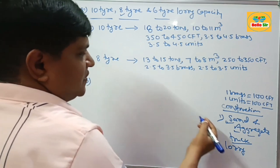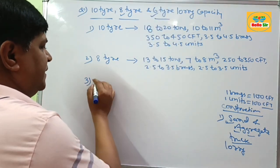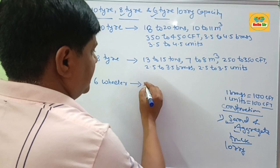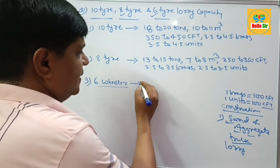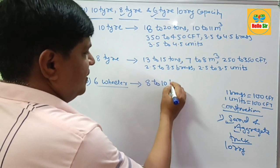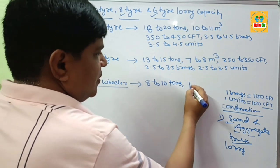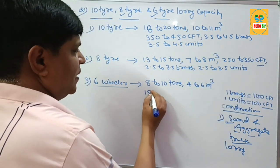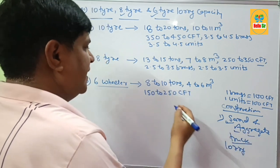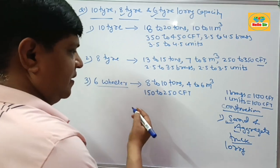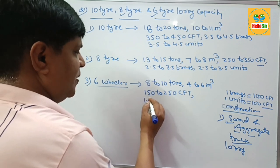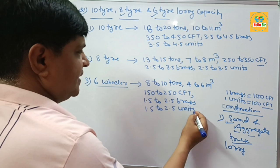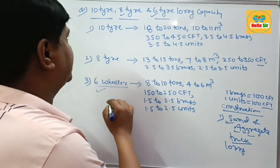The carrying capacity of a truck that has 6 tires or 6 wheels is about 8 to 10 tons. If you measure this in cubic meters, this will be 4 to 6 cubic meters. And in CFT, this will be 150 to 250 cubic feet of material. If you measure in brass, this can be 1.5 to 2.5 brass, and in units, 1.5 to 2.5 units of sand and aggregate can be hauled by a 6-tire truck.